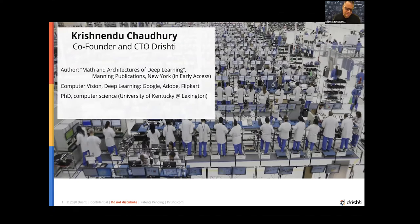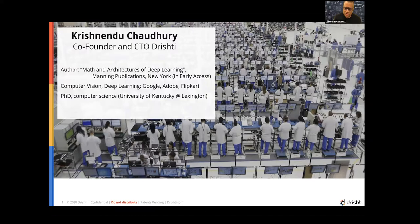Hi everyone. As Swonger said, I have a book called 'Math and Architectures of Deep Learning.' You're welcome to buy it — it costs 60 dollars, I get six dollars out of that, so if you buy the book I'll buy you coffee and you're even. I'm pretty sure the other authors in the audience are resonating with that.